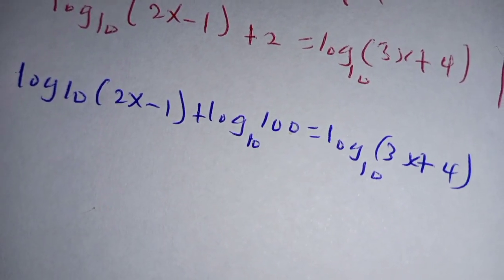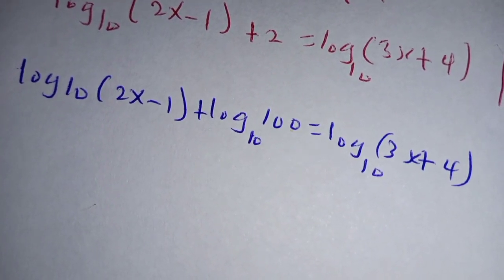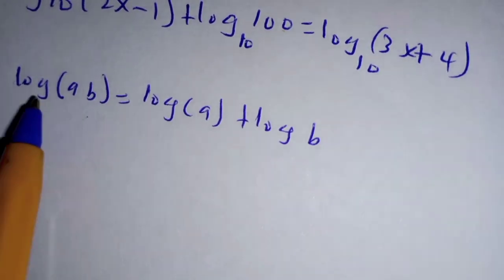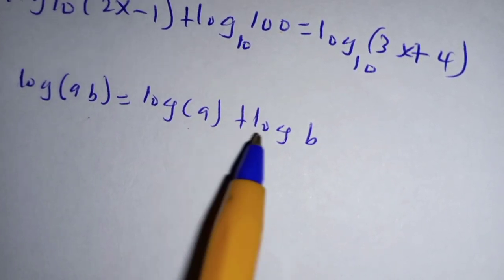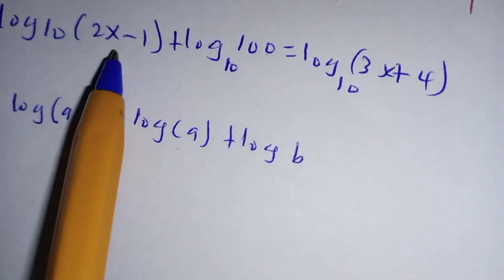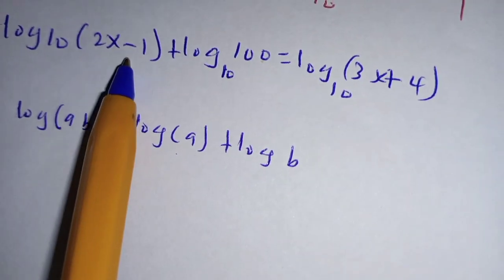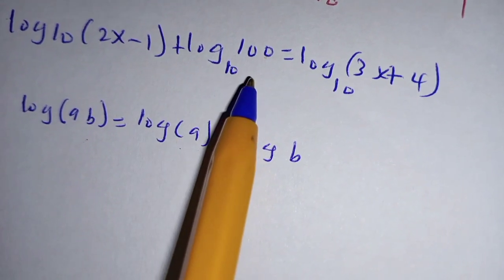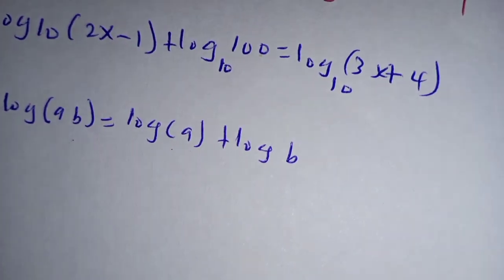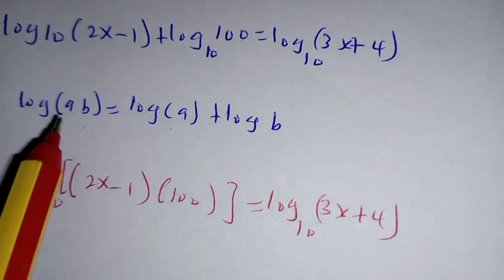When you have log of a times b, it's the same as log of a plus log of b. So we combine the logarithm of (2x - 1) with the log of 100 as follows. Because we are adding them in the same logarithm, we can multiply the two.